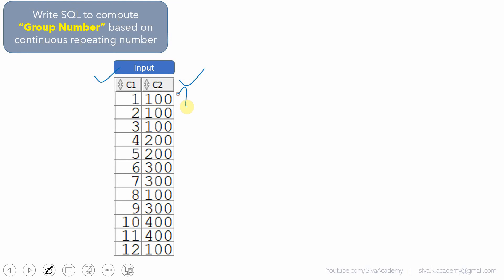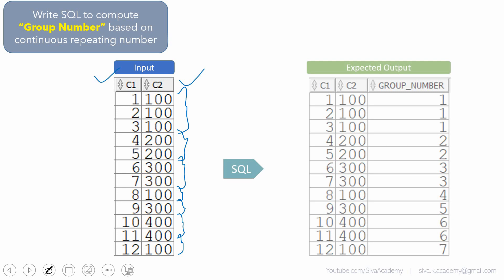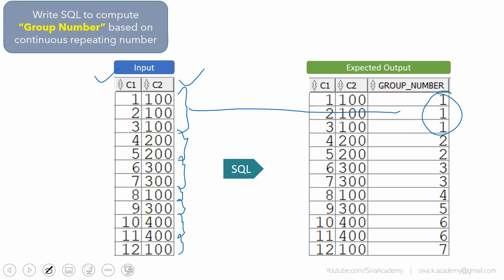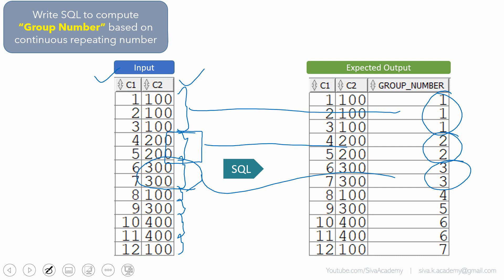For example, here 100 repeats, then 200, 300, then 100, 300, 400, 100. What we need to do is write a SQL to assign a group number based on this repetition. For 100, we give group number 1. The next repeating set of 200, we give group number 2. The next repeating set of 300, we give group number 3. Similarly, we just give a group number for all the repeating numbers.